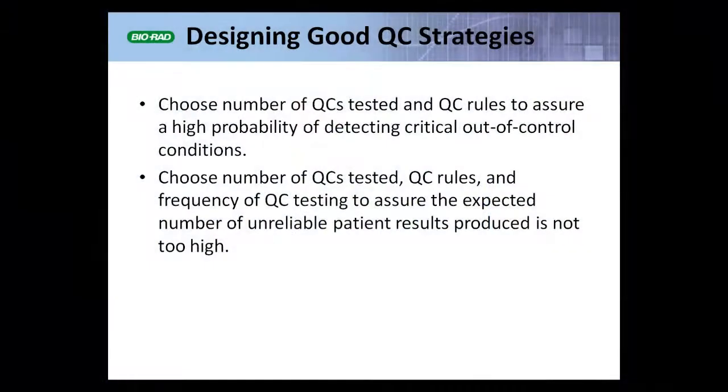Another more recent approach, developed by me and building on the theories of Dr. Westgard, tries to directly bring the frequency of quality control testing into the mix. This second approach: choose the number of QCs tested, the QC rules, and the frequency of QC testing to assure that the expected number of unreliable patient results produced is not too high.